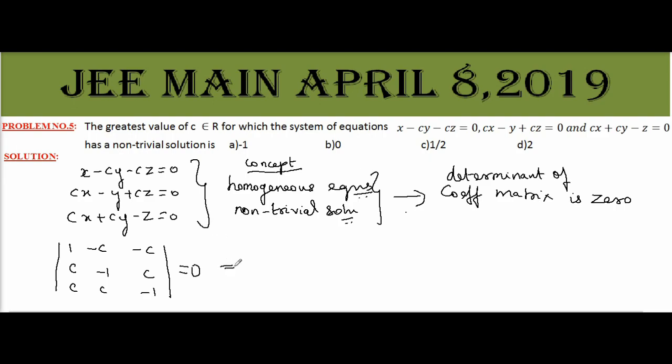Now if we expand the determinant, 1 minus c square plus c into minus c minus c square minus c into c square plus c equal to 0.